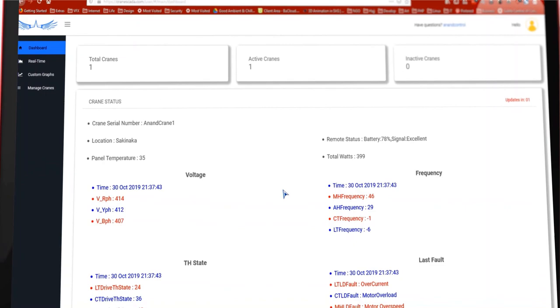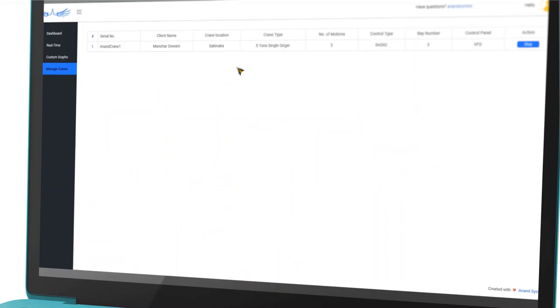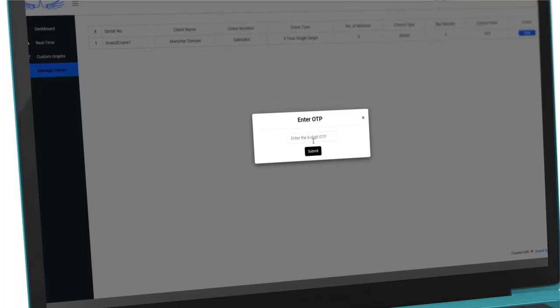Crane manufacturers and crane users can login to cranescada.com and they can check the health of their crane which gets updated every 5 seconds. The best feature of Crane Scada is the stop function where you can remotely stop your crane in case of an emergency.